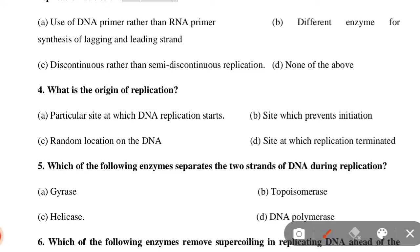Next MCQ: What is the origin of replication? Option A: A particular site at which DNA replication starts; Option B: A site which prevents initiation; Option C: A random location on DNA; Option D: A site at which replication is terminated. Option A is correct — a particular site at which DNA replication starts.